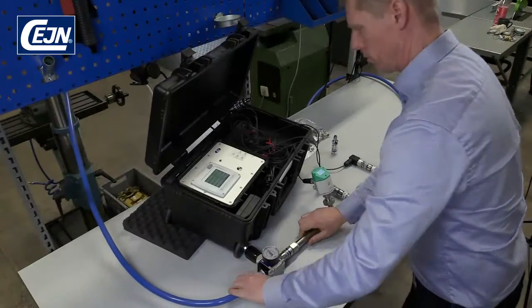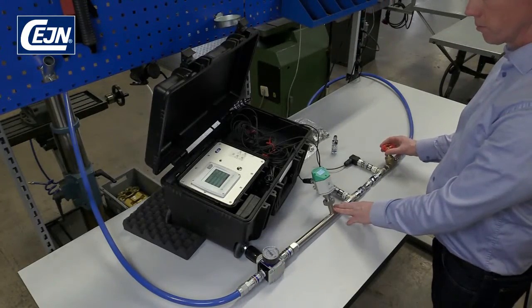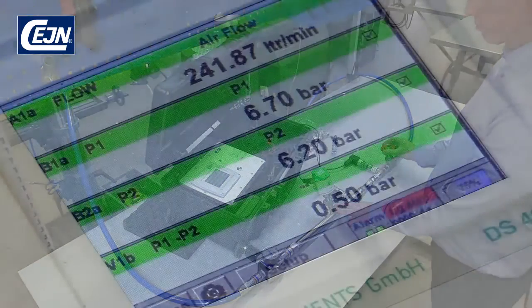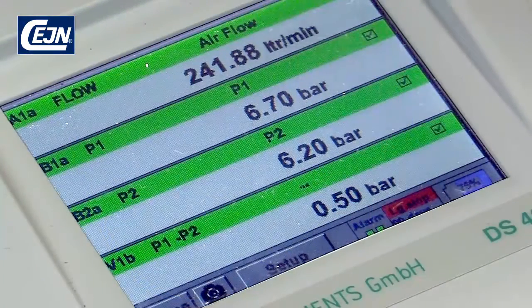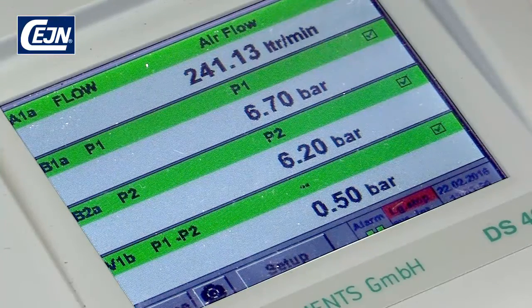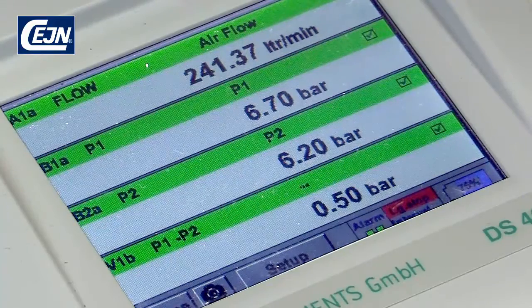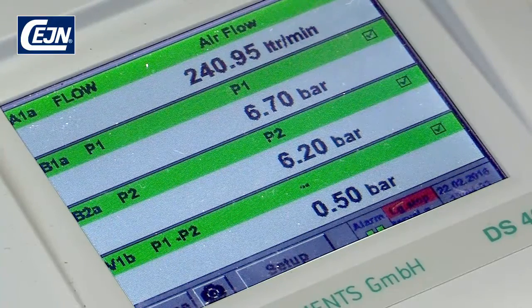Now we can start measuring the flow. If necessary, you can adjust the valve to achieve more or less the same value as before. In this case, it's impossible to make any adjustments as the coupling is inferior to the previous one. As you can see, the coupling is showing a reading of only 240 litres and the pressure drop is enormous.